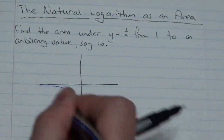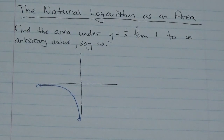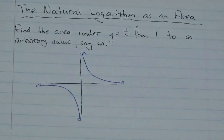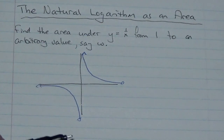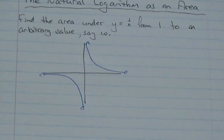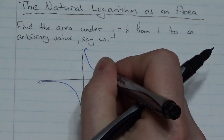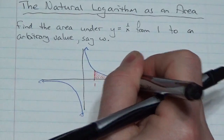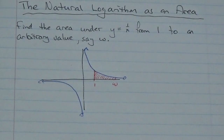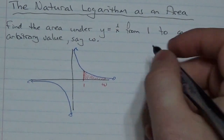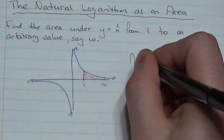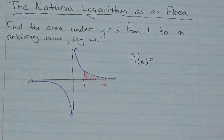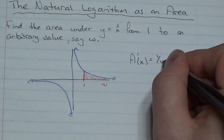Because 1 over x is kind of the simplest expression of that rational function. It's got the two asymptotes — the vertical asymptote at x equals 0, and horizontal asymptote at y equals 0. Now, if we want to find the area under this from 1 out to some arbitrary value w, we are looking for that area right there.